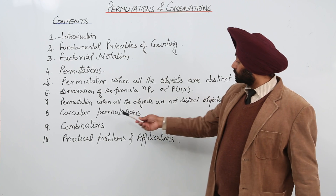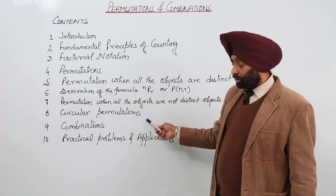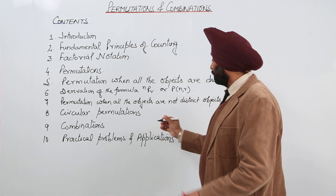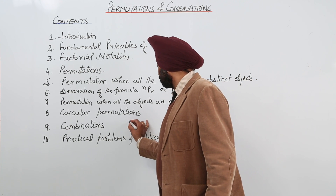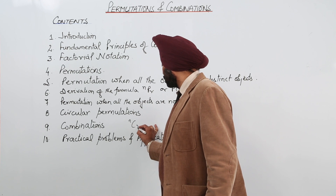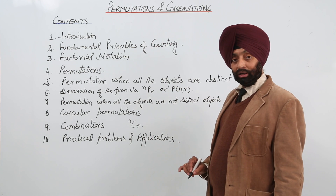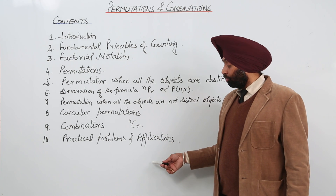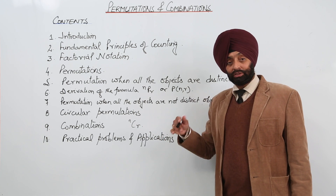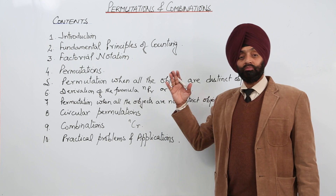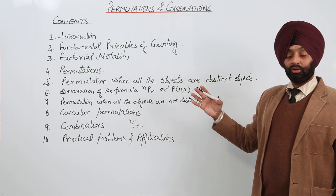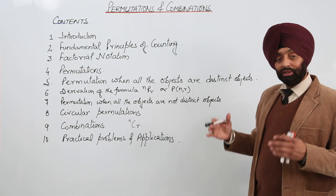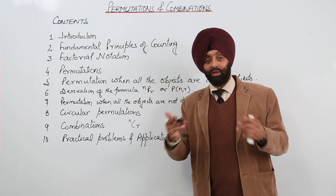Then we are having circular permutations, combination — for the combination we are also writing it in the form of NCR. This is written as the formula NCR. And then practical problems and applications based on combinations and permutation. So this is what we are going to do in this very interesting chapter.